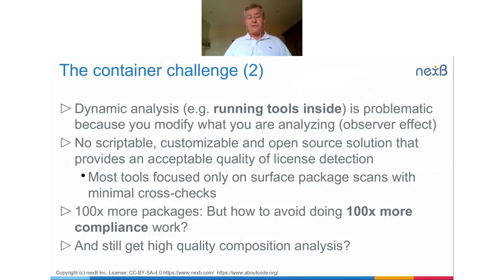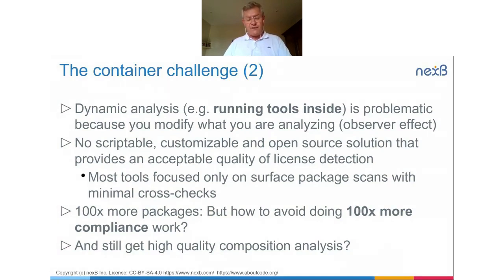Most of the tools end up focused on surface package scans, just really looking at the surface of metadata provided and doing minimal cross-checks. The problem is that if you have minimal cross-checks, you can end up having both bad surprises and incorrect information. And of course, the elephant in the room is we now have potentially 100 times more packages — how could we avoid doing 100 times more compliance work while still getting high quality information from the analysis of these container images?